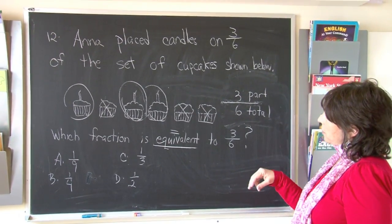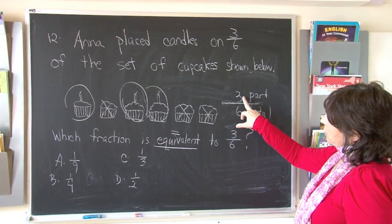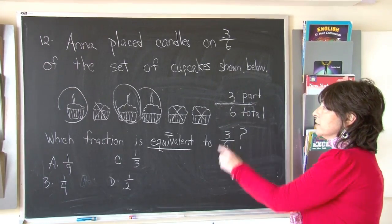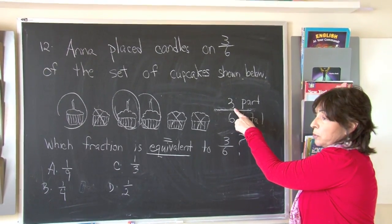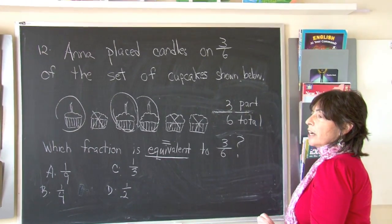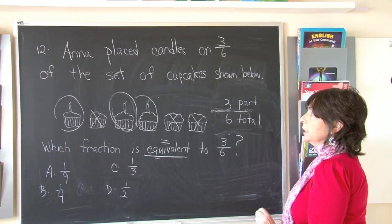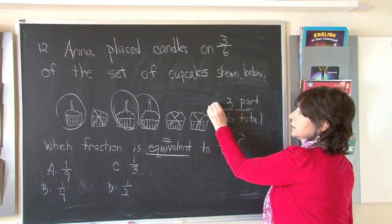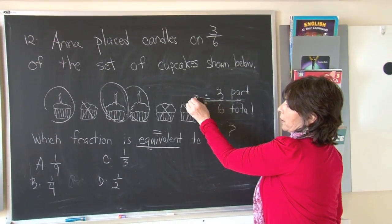What number can we divide that will go into three equally and six equally? Well, one would, but that would still give us three-sixths. Can we divide three by two equally? No. Can we divide three by three equally? Yes. Can we divide six by three equally? Yes. So let's divide both of these by three.